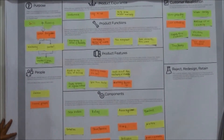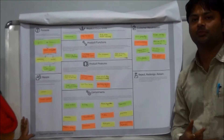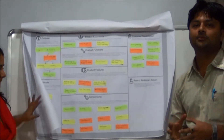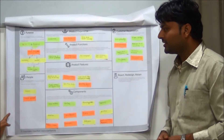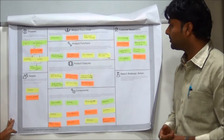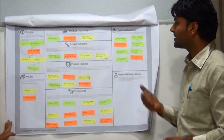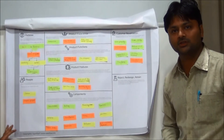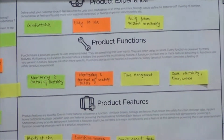The next canvas is the product development canvas. We first define the purpose of this prototype or model — what is the main purpose of our product. Then we define what people it will be helpful to. Then we define the experience of this product, its product functions, and various product features. We also define what components we are using in the product, and finally customer evaluation, rejection, and redesign.